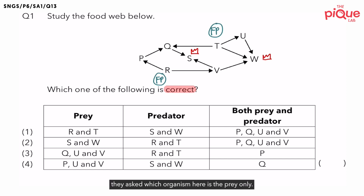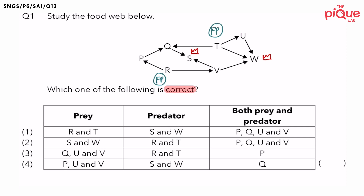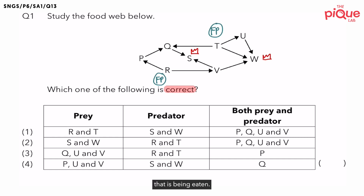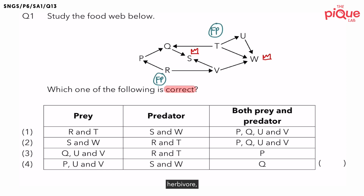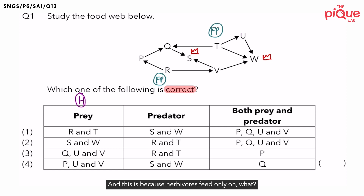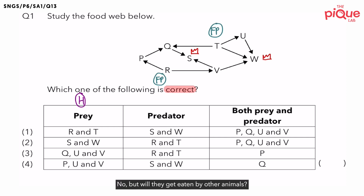For the first part of the question, they ask which organism is the prey only. To find out which one is the prey, we have to recall what we consider a prey. Be very careful — a prey has to be an animal. It cannot be a plant that's being eaten. So we know that the prey has to be an animal that is being eaten. There is a special type of animal that is only being eaten — we call them herbivores. Herbivores feed only on plants, they do not eat other animals, but they will definitely get eaten by other animals. So herbivores must be prey.